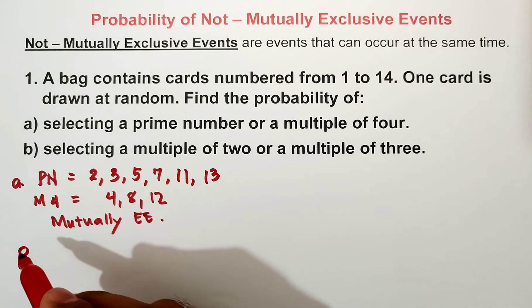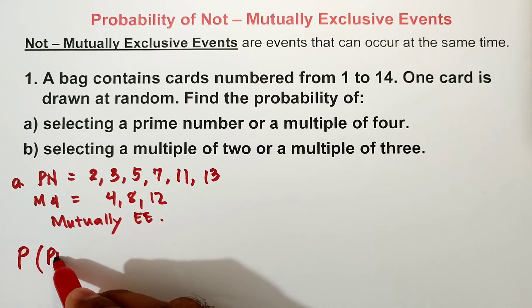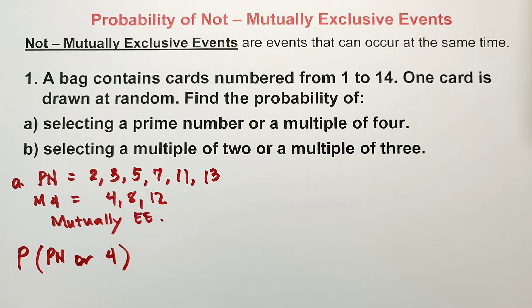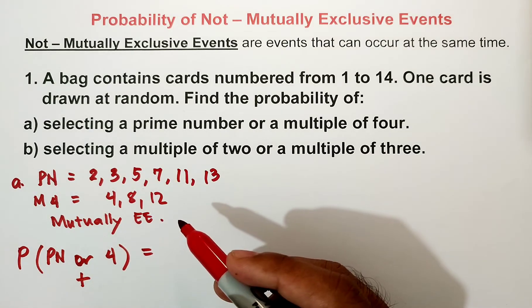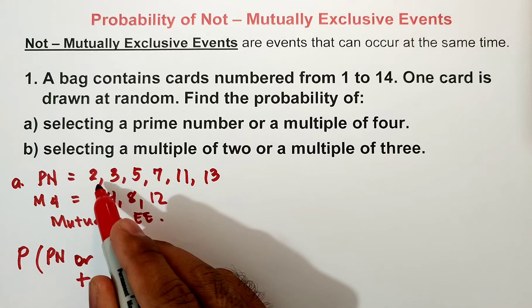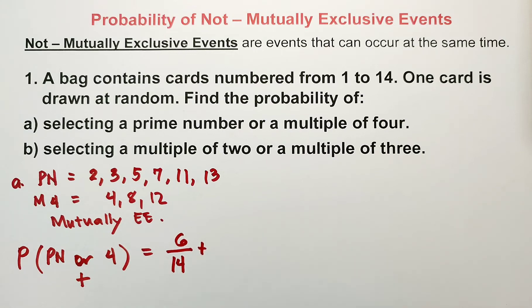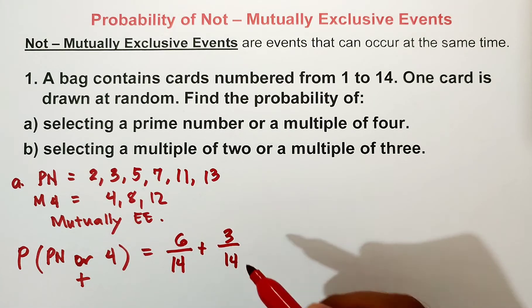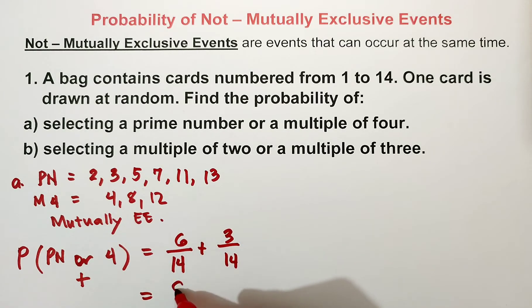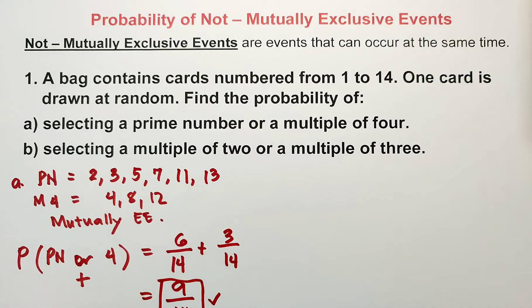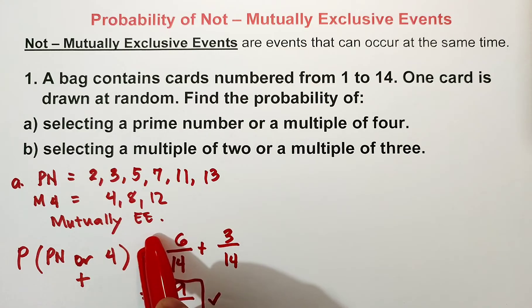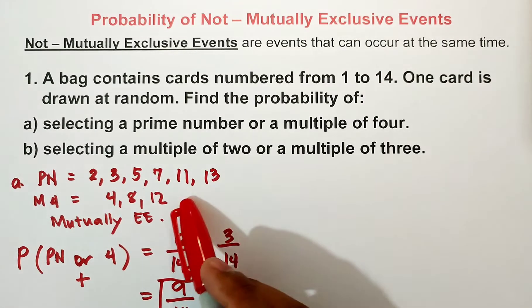The probability of getting a prime number or a multiple of 4 — since it's mutually exclusive, we use addition. Probability of prime numbers is 6 out of 14, plus probability of multiples of 4 which is 3 out of 14. So 6 plus 3 is 9, over 14. Final answer: 9 over 14.